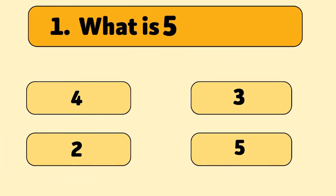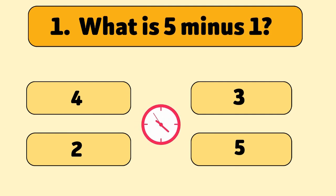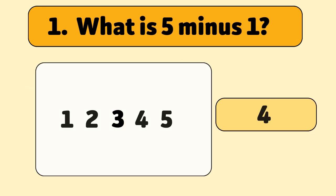What is five minus one? The answer is four. We start with five and take one away. That leaves us with four.